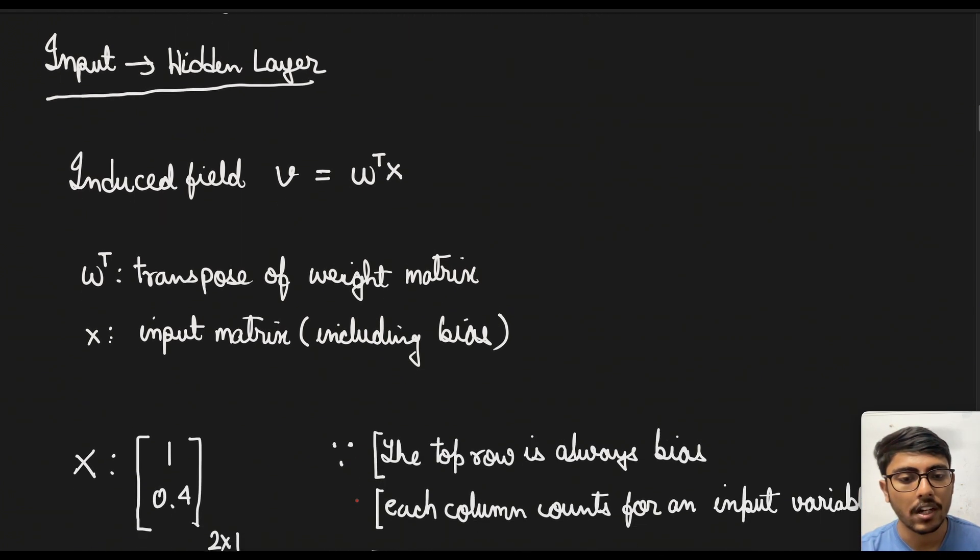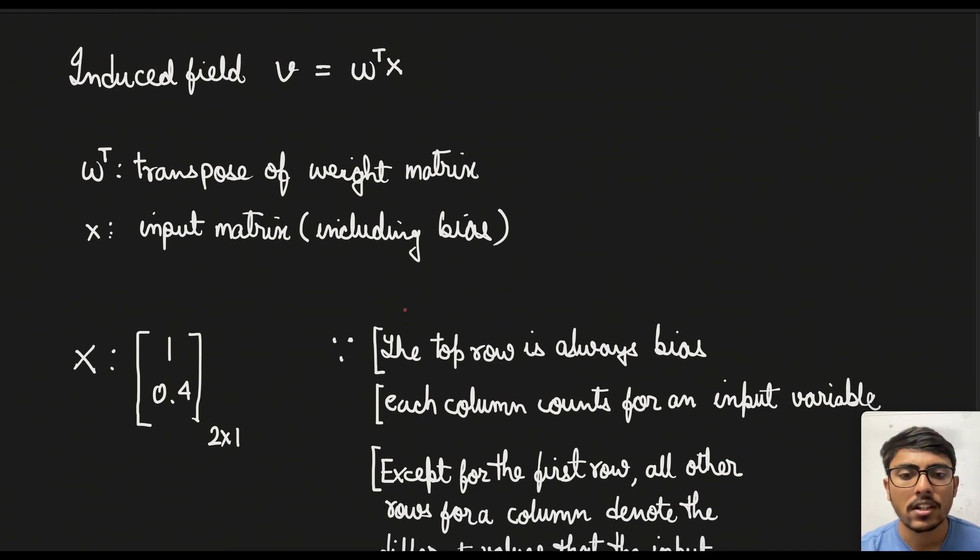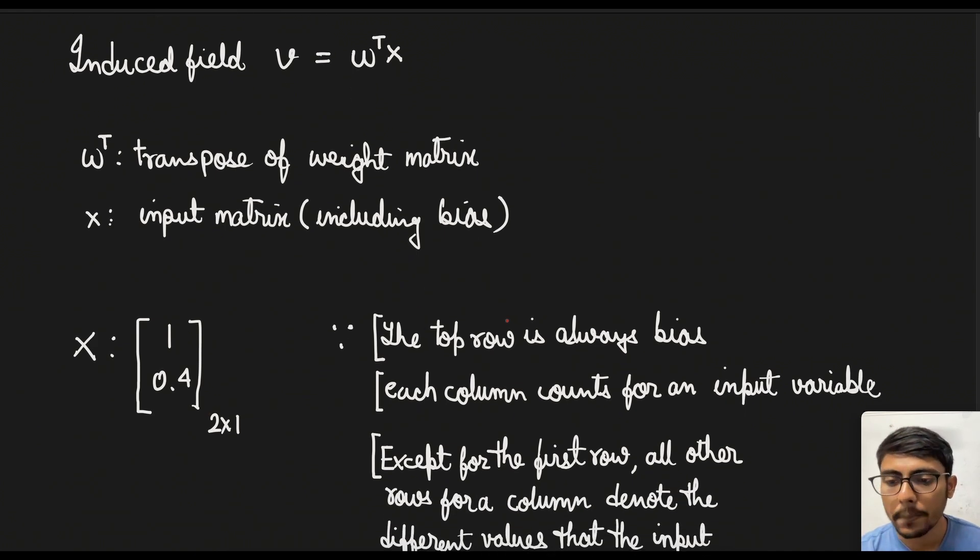So if we see x in our case will be 1 and 0.04. So it will be a 2 × 1 matrix. Now here the top row will always be bias, that is the bias given here is 1 so it will always be 1.